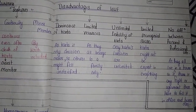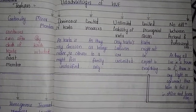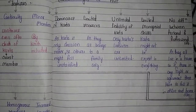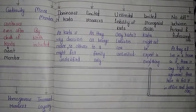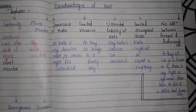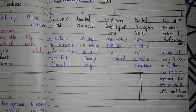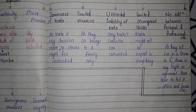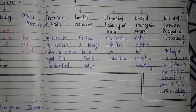The disadvantages of HUF: first is dominance of Karta. Second is limited resources — since all members belong to a single family, the resources they can bring are limited. Third is unlimited liability of the Karta. Fourth is limited managerial skills — since the Karta is the only decision maker, he might not be good at all activities, resulting in limited managerial skills.